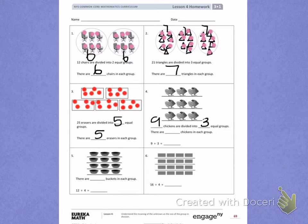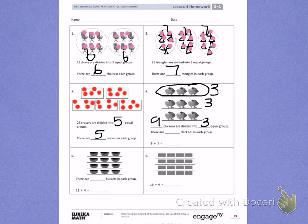There are blank chickens in each group. Again, 1 row is a group. So in each row, I have 3 in this row, 3 chickens in this row, 3 chickens in this row. There are 3 chickens in each group.